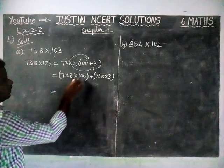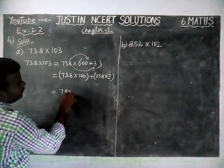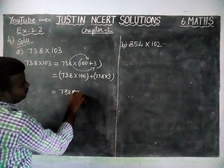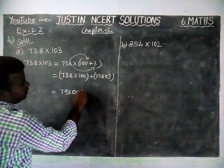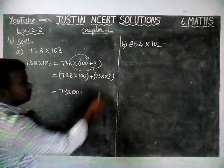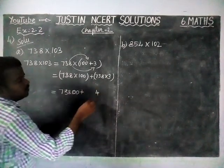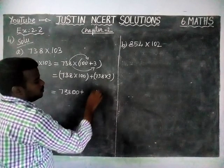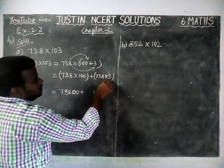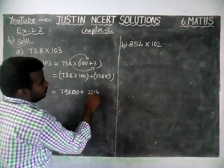When we are multiplying with zeros, we can simply add the zeros. Now we multiply 738 into 3: 8 threes are 24, write 4 carry 2; 3 threes are 9, 9 plus 2 is 11, write 1 carry 1; 7 threes are 21, 21 plus 1 is 22.